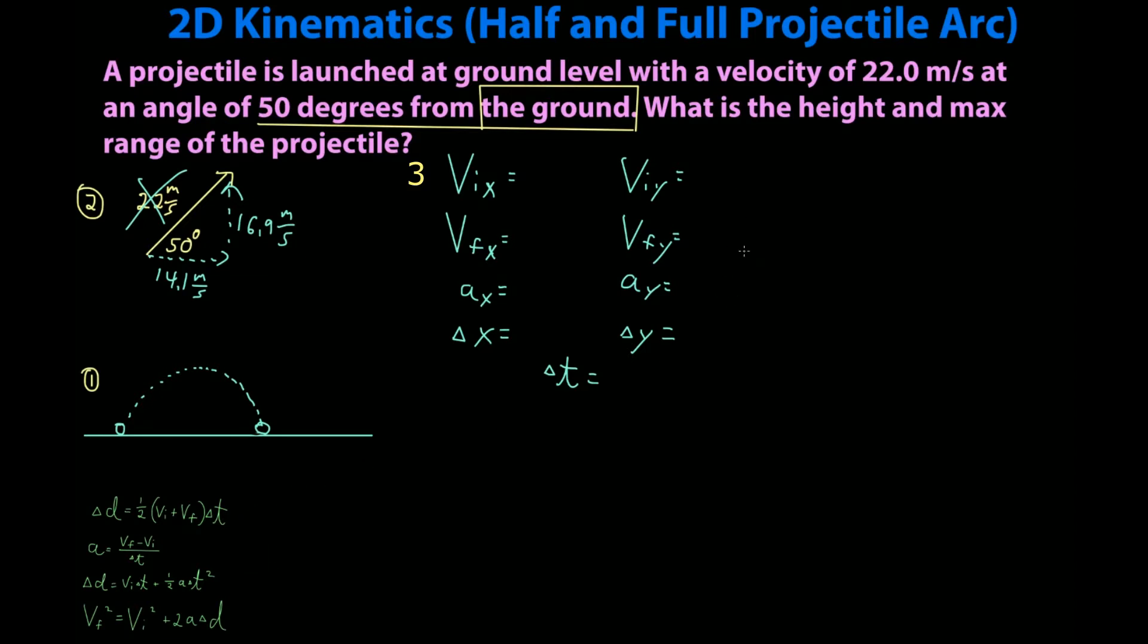This is also a good time to label my initial and final points on my picture here. So your projectile is launched at ground level with a velocity of 22 meters per second at an angle of 50 degrees from the ground. What is the height and max range of the projectile?